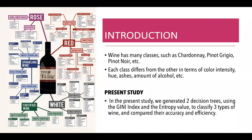For the present study we generated two decision trees using the Gini index and the entropy value to classify three classes of wine, and we compared the accuracy and efficiency of the two trees that we generated.